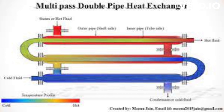Double pipe heat exchangers have two concentric pipes, with one fluid flowing inside the inner pipe and the other flowing in the annular space between the inner and outer pipes.